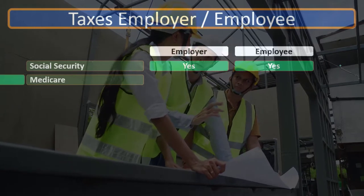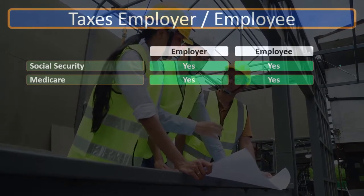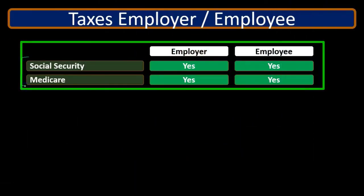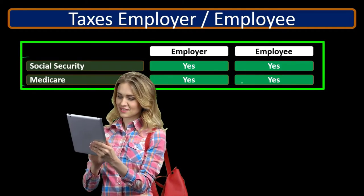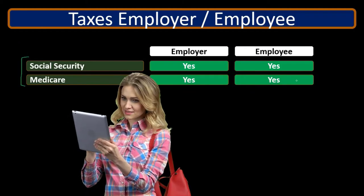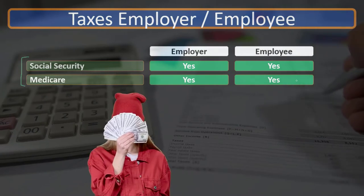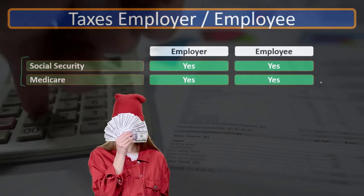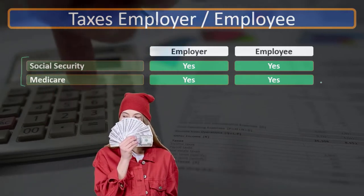Then we've got Medicare — is it an employer tax? Yes. Employee tax? Yes. Same thing, because these are the two FICA taxes and they're set up in a similar fashion: the employer will pay half of it, kind of like a matching idea, and the employee will pay the other half. So it will be calculated in the gross pay, reducing the gross pay, but only by half. The other half is paid by the employer and not included in the net pay calculation.